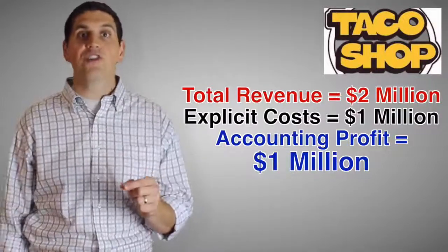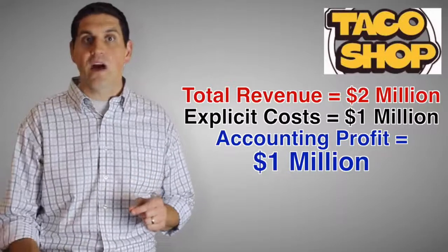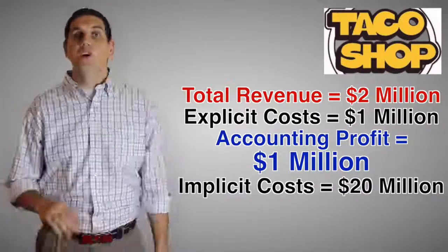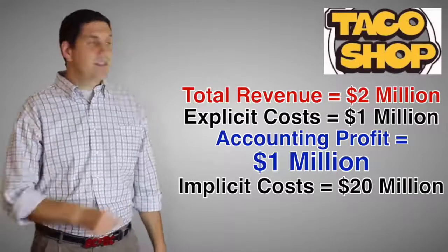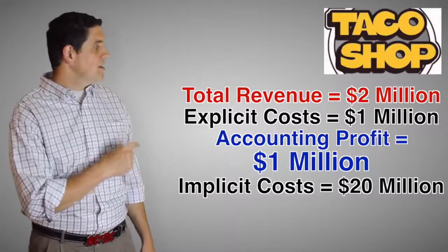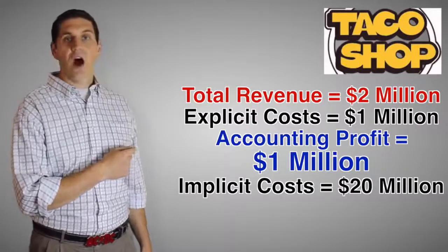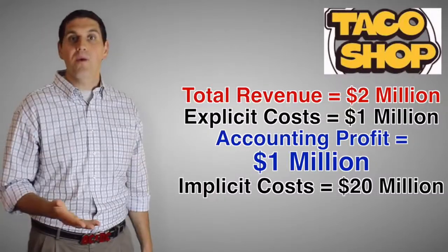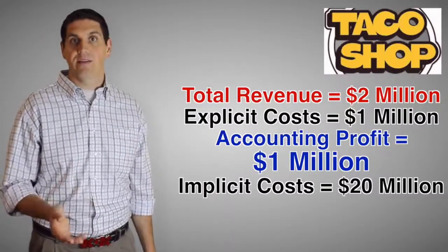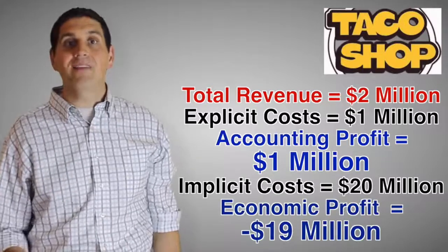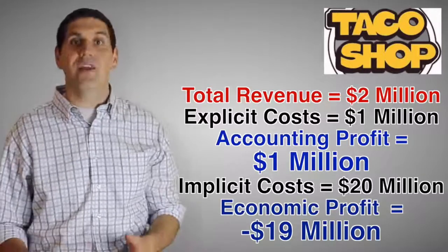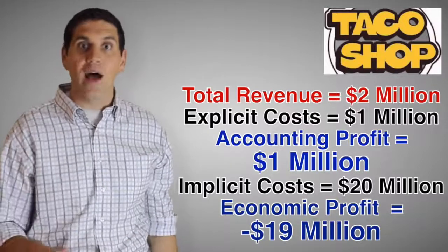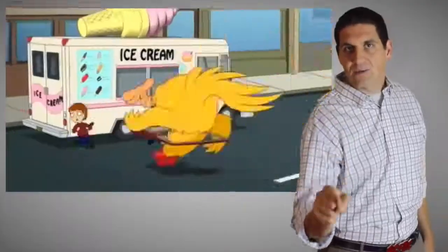But the economist also factors in the implicit costs — the $20 million that LeBron could be making if he stayed in the NBA. So let's calculate economic profit: it's $2 million of revenue minus $1 million of explicit costs, also subtract out the $20 million of implicit costs. If you look at it that way, LeBron's actually losing $19 million by opening up that taco shop — it's a loss, not a profit. Take that, accountants.